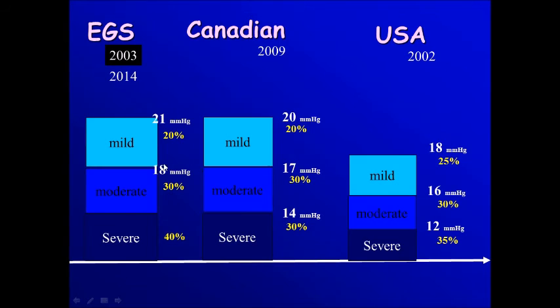On the other hand, suppose we have a patient with 22, then we choose to go for 20 percent reduction.